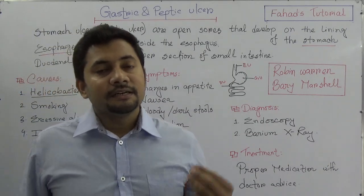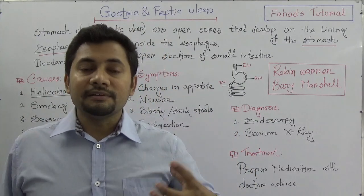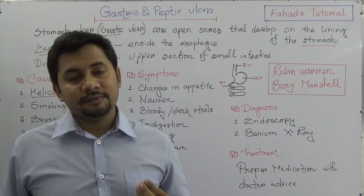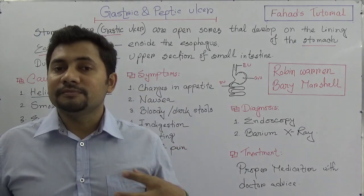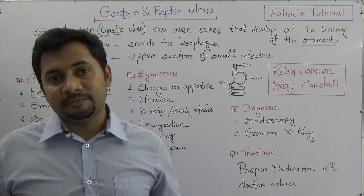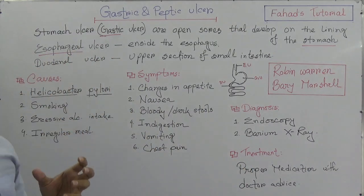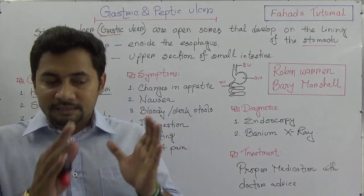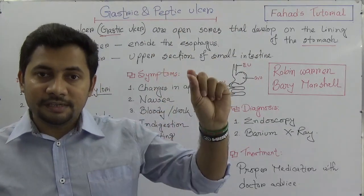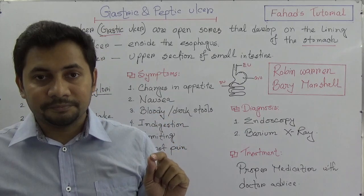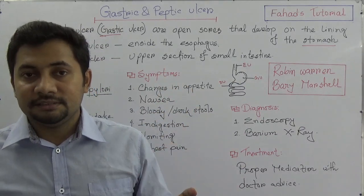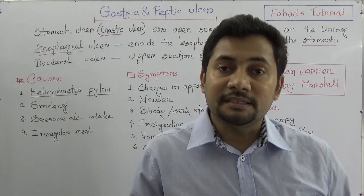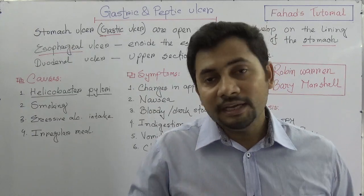The first reason for peptic ulcer is irregularities in food habits — taking spicy foods and oily foods, and excessive intake of oily foods. Irregular food-taking behavior is a main reason for developing peptic ulcer. The main cause of peptic ulcer is the bacteria called Helicobacter pylori, or in short, H. pylori.